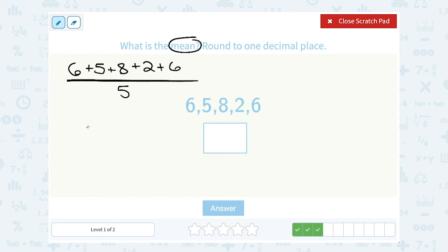When I add up all those numbers, that gives me 27. And then I still need to take that and divide it by 5, and that gives me 5.4 for my mean or my average.